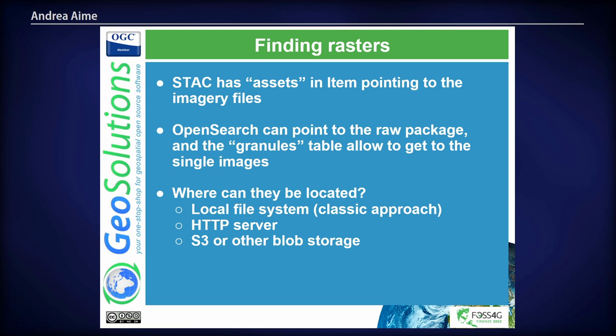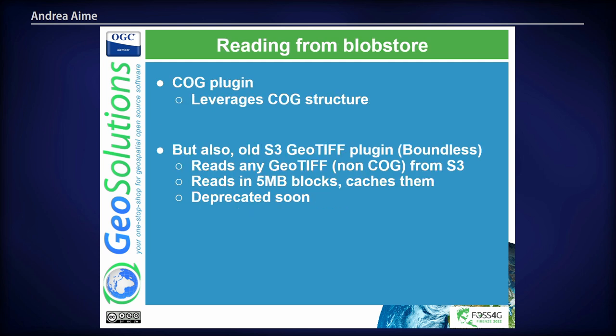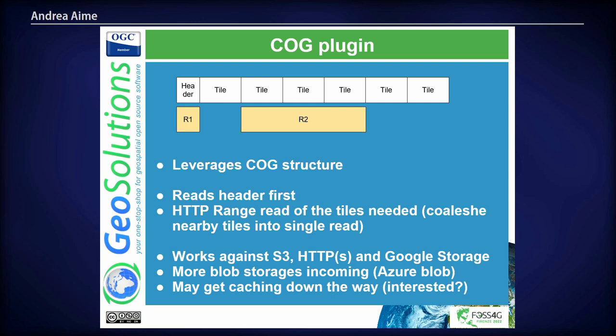As I said, STAC and OpenSearch both have links to services but also to the individual elements that make up the products — the assets. In GeoServer terms, they might be located on the local file system, which is the most common use case but also the less interesting one. Or they could be on an HTTP server, an S3 bucket, Azure Blob, or any cloud blob storage. We can read directly from those blob stores using the COG plugin — the cloud-optimized reader — which leverages the COG structure. We also have an older reader that can read literally any GeoTIFF, whether formatted as a COG or not; it's less efficient but more general. The COG plugin is smart enough to get the header of the file and then do HTTP range reads to get only the tiles it needs, without having to read anything else.